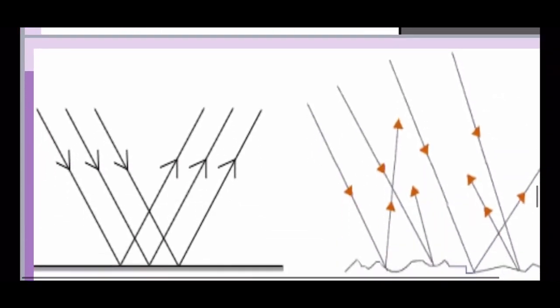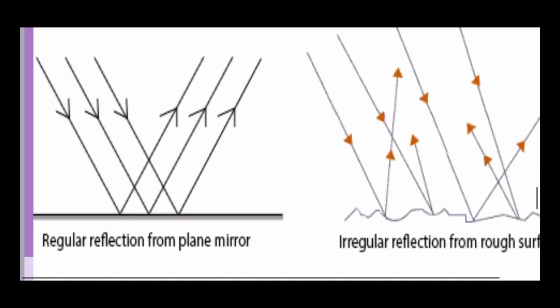The reflection can be of two types depending on the nature of the surface which the light ray strikes. In regular reflection, the surface is smooth and the incident ray and the reflected rays are always parallel to each other. Regular reflection of light can form an image.